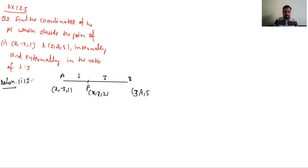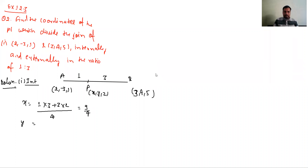Pehla ho gaya internal division formula lagega. X equal to (1×3 + 3×2) divided by 4, to matlab 3 plus 6 ho gaya 9 by 4. Y equal to banega 1 into 4 plus 3 into minus 3.